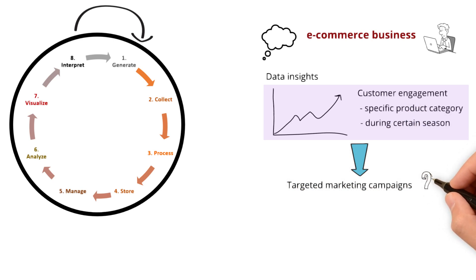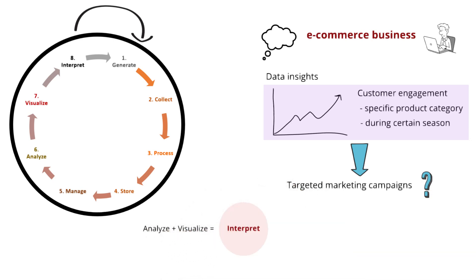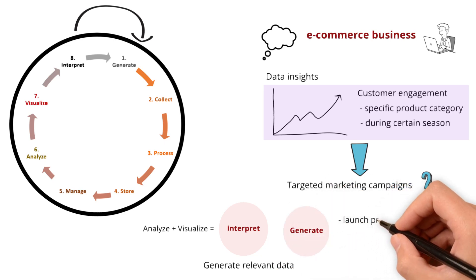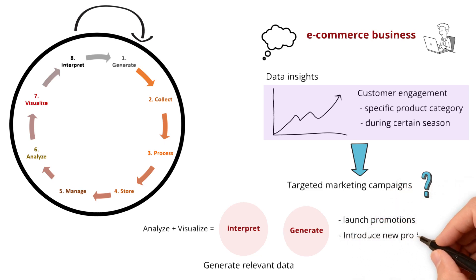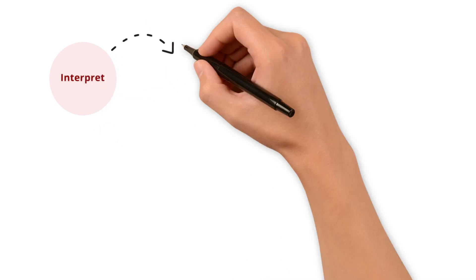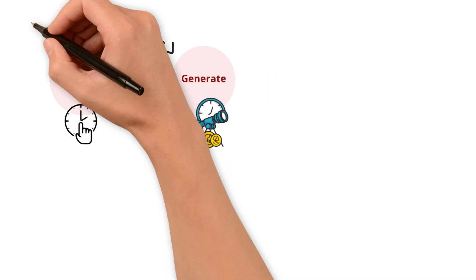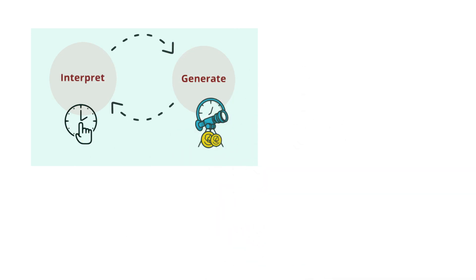So, what exactly happened here? Your interpretation of the data, derived from the analyze and visualization stages, guides you to generate more relevant data in the upcoming seasons. So, in the generate stage, you strategically create more data by launching promotions, introducing new products, and enhancing customer interactions during those peak times. In a sense, the interpret stage acts as a compass guiding the generate stage. It's where we don't just learn from the past, but actively shape the future data we generate. This dynamic relationship between interpretation and generation is what keeps our data journey cyclical and ever-evolving.